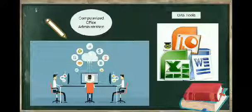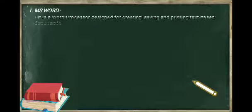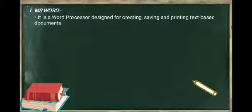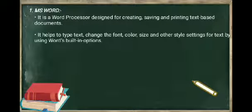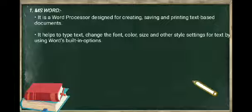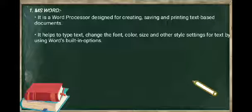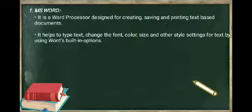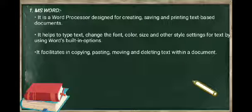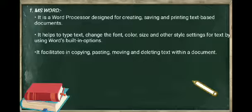First OAS tool is MS Word. It is a word processor designed for creating, saving and printing text-based documents. It helps to type text, change the font, color, size and other style settings for text by using Word's built-in options. It facilitates copying, pasting, moving and deleting text within a document.